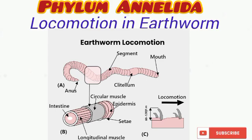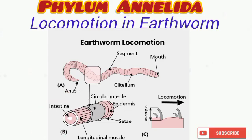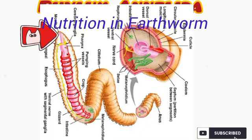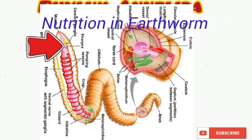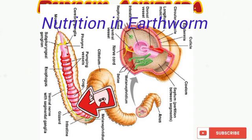Earthworms carry out peristaltic movement, where the anterior part moves forward followed by the posterior part. This movement is controlled by the muscles of the body, and they possess a hydrostatic skeleton. Nearly all oligochaetes are scavengers; earthworms feed primarily on bits of leaf, vegetables, decaying organic matter, and animal matter. Secretions from the mouth help to moisten the food particles, which are sucked up by the muscular pharynx. The prostomium helps to manipulate the food.